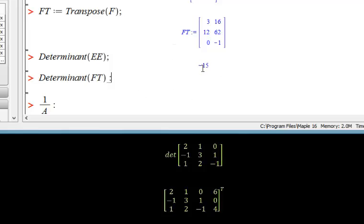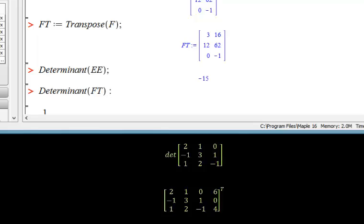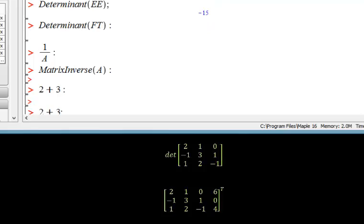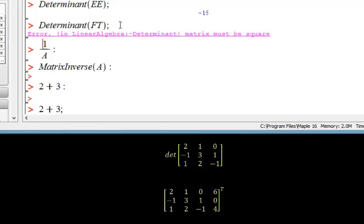If I want to attempt to find a determinant of a non-square matrix, I will receive an error message that is going to tell me that the matrix must be square and actually will give you a link such that you can click on it and go and read more about it on the Maple site.